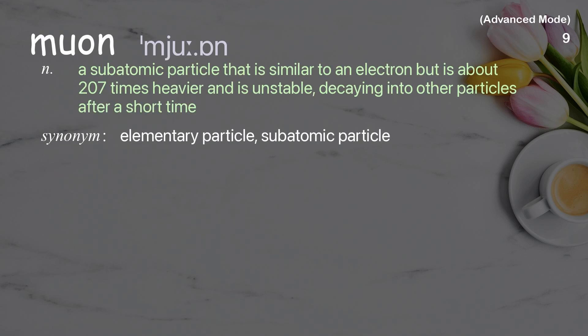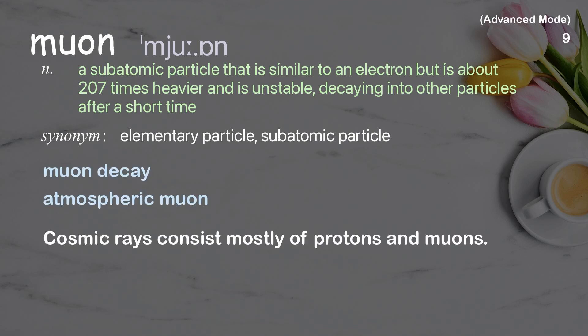Muon: A subatomic particle that is similar to an electron but is about 207 times heavier and is unstable, decaying into other particles after a short time. Examples: muon decay, atmospheric muon. Cosmic rays consist mostly of protons and muons.